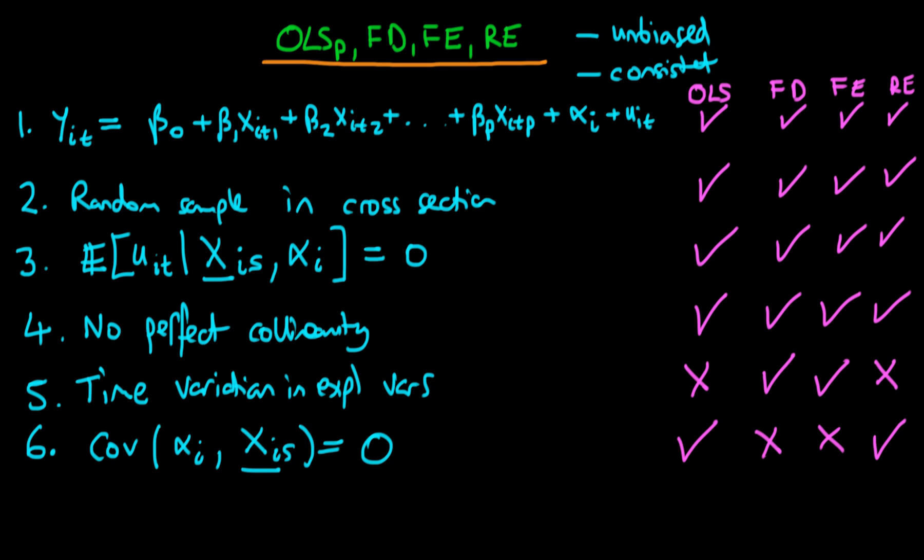Okay, so if we have each of the given criteria which we stated here being satisfied for each of the different models what properties do these different models have? Well for pooled OLS if the above ticked conditions are satisfied then pooled OLS is both consistent and unbiased. And this is similarly the case under the criteria which are satisfied for first differences and fixed effects estimators respectively.